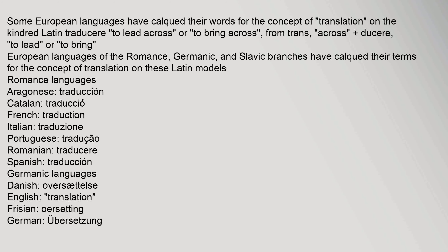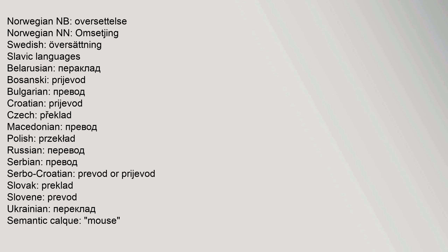Romance languages with calked words for translation: Aragonese, traducción; Catalan, traducció; French, traduction; Italian, traduzione; Portuguese, tradução; Romanian, traducere; Spanish, traducción. Germanic languages: Danish, oversættelse; English, translation; Frisian, oersetting; German, Übersetzung; Norwegian Bokmål, oversettelse; Norwegian Nynorsk, omsetjing; Swedish, översättning.